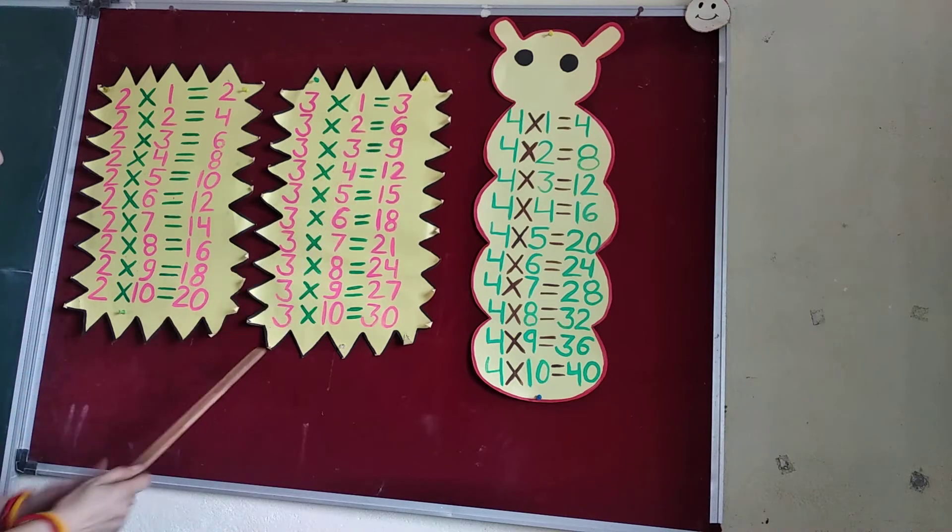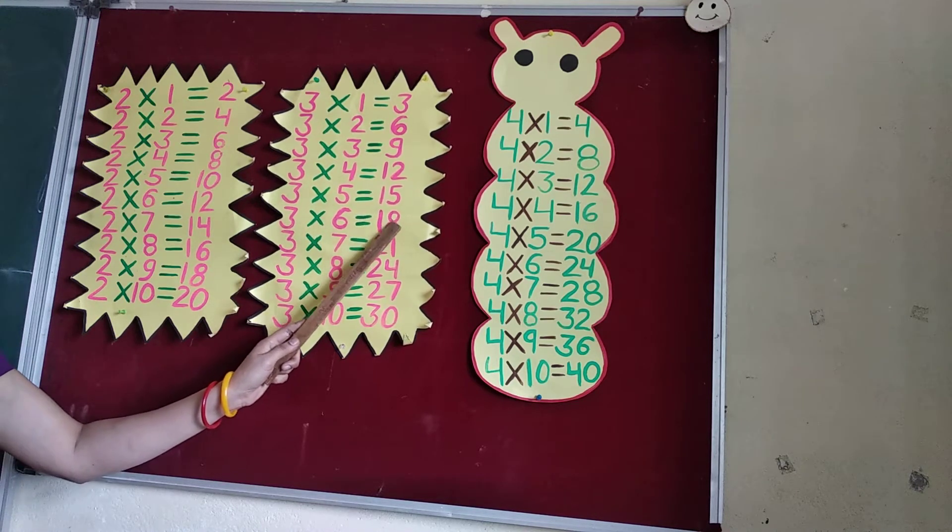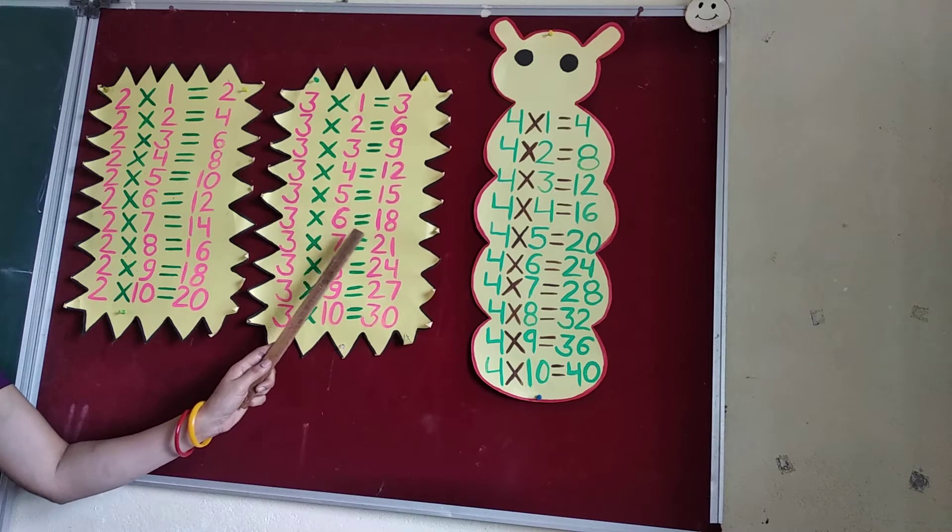3 2's are 6. 3 3's are 9. 3 4's are 12. 3 5's are 15. 3 6's are 18.